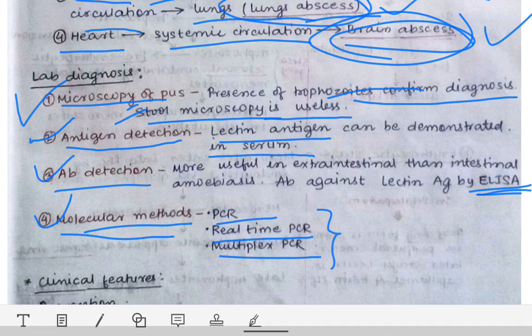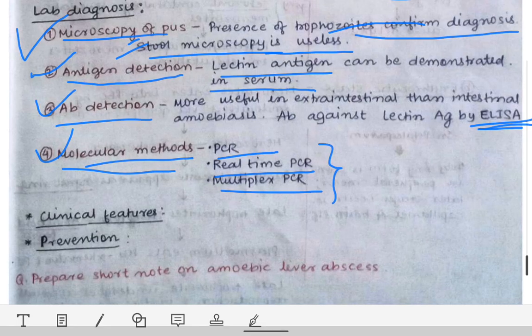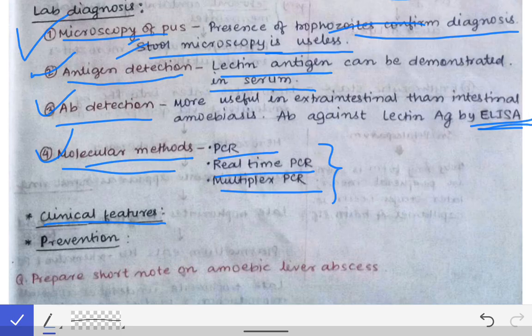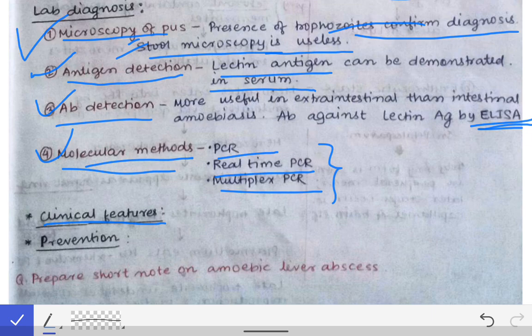The clinical features of extra-intestinal amoebiasis depend upon the site involved. If the liver is involved, there will be epigastric pain and jaundice. If the lungs are involved, respiratory symptoms will be present. Likewise, the clinical features vary depending on which organ the extra-intestinal amoebiasis is affecting.